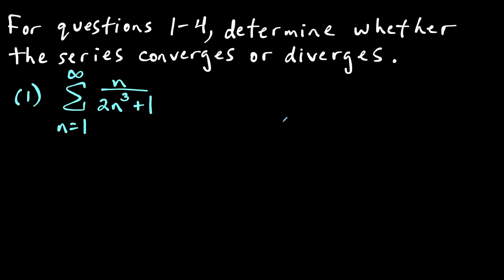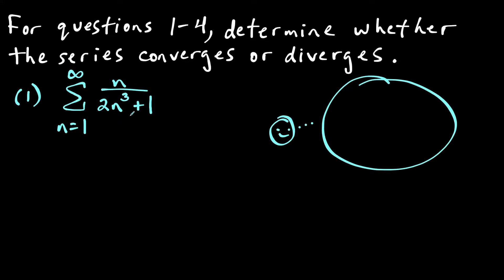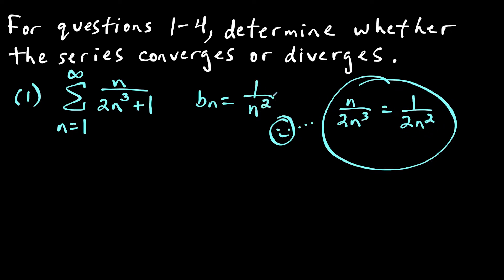For this first example, we're going to use the following trick: when trying to come up with a comparative series for a rational function, we want to think about just the leading terms. So we're going to think about n over 2n³, which simplifies to 1 over 2n² when we simplify n over n³. This trick is going to work because when we set up our limit, comparing the original series to this sequence, that's going to help us get to our conclusion.